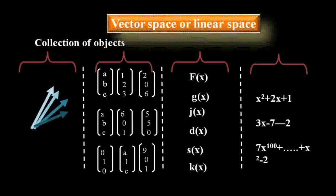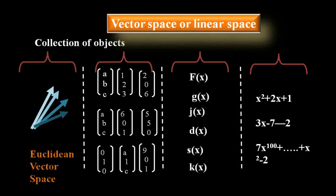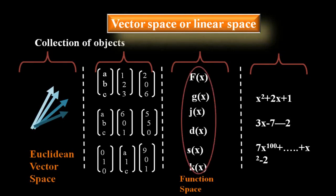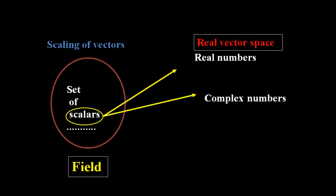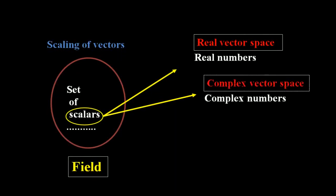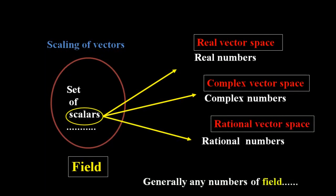A space or collection formed by arrows is called Euclidean space, while the space formed by functions is called function space, where the functions are the vectors. In scaling of vectors, the scalar creates a field. If scalars are real numbers, then the vector space is known as real vector space. If numbers are complex, then the space is complex vector space. The space for rational numbers is called rational vector space. In general, any field of numbers can be used in vector spaces.